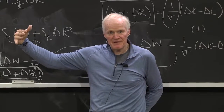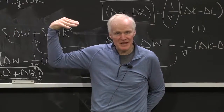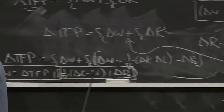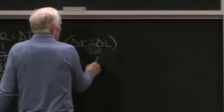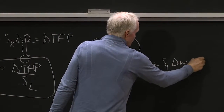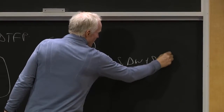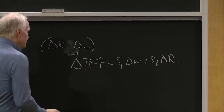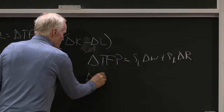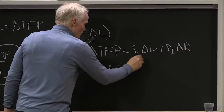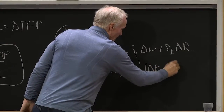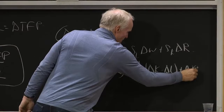Malthus had the same theory. Malthus' model is the same model we have on the board. Malthus adds a model — his equation is basic. We have delta GF3 equals SL delta W plus SK delta R. And delta W minus delta R equals 1 over sigma times delta A minus delta L plus delta B. That's Malthus' theory.